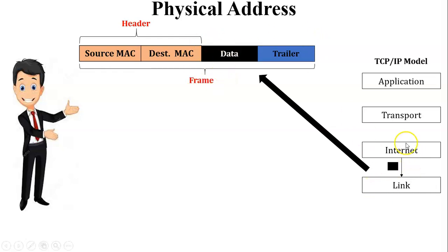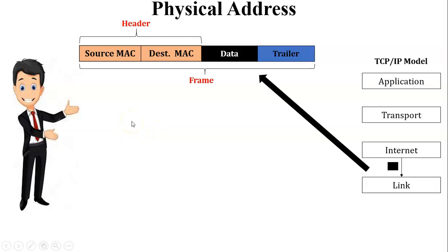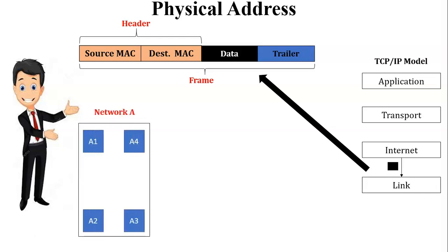This whole structure — data with MAC header and trailer — is called a frame. Whenever data reaches the link layer, it is converted into a frame. Now the question is how exactly data is transferred using the MAC address.